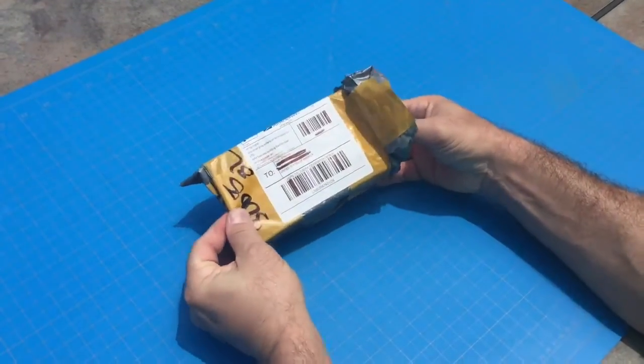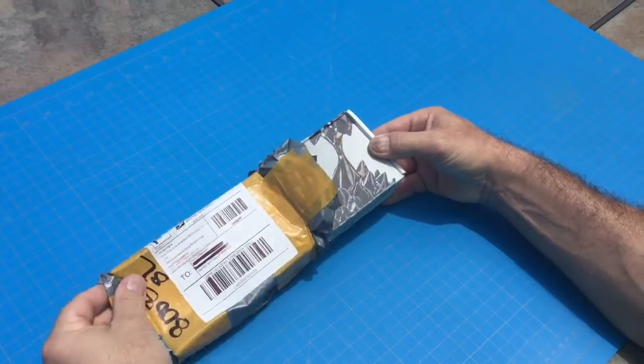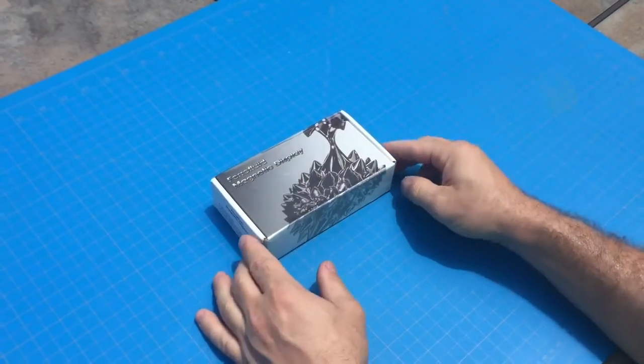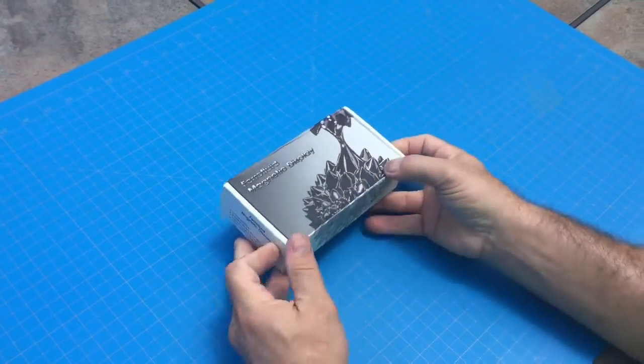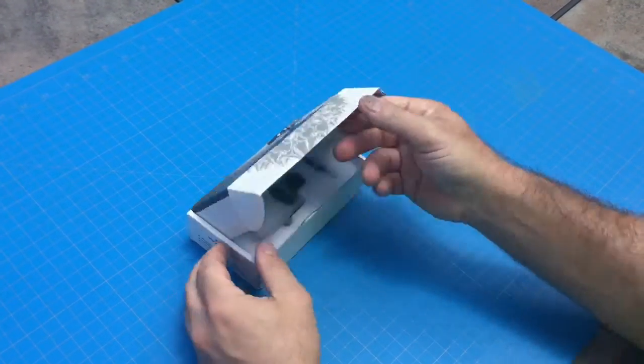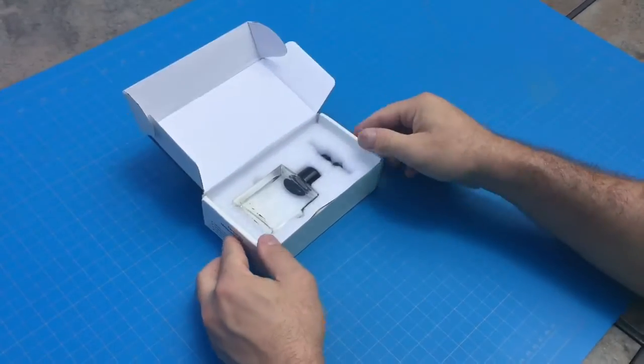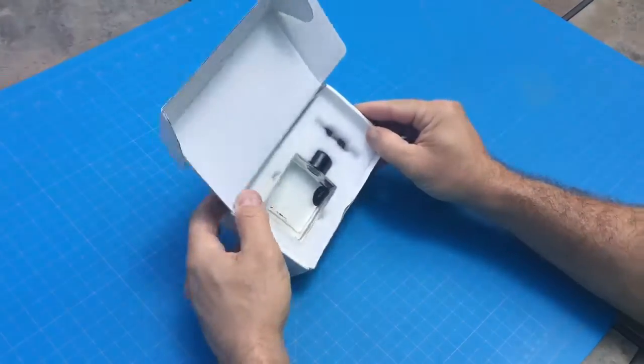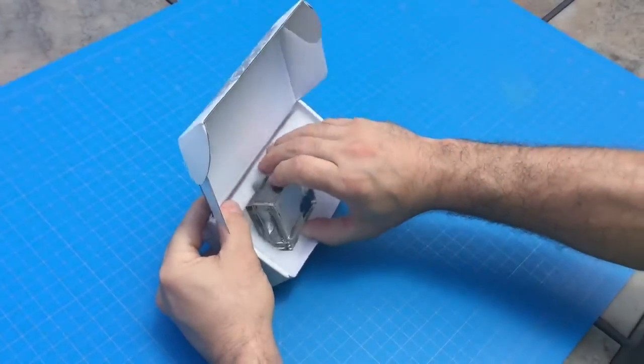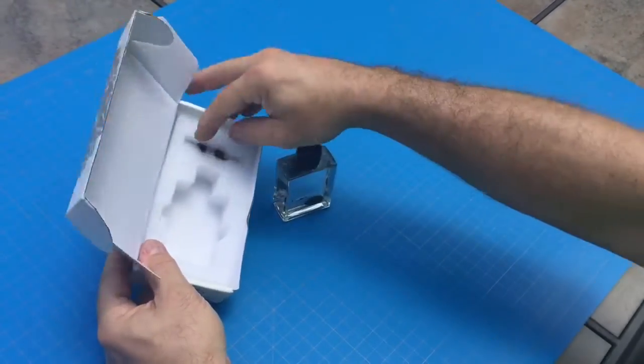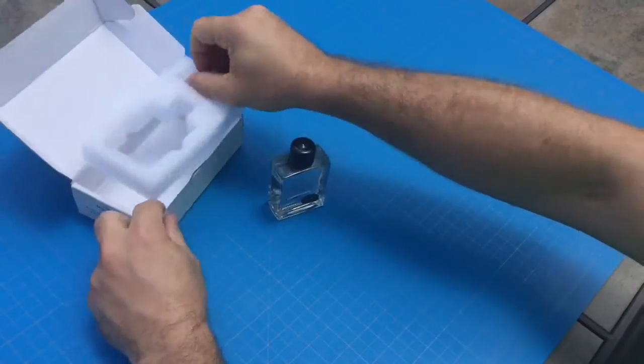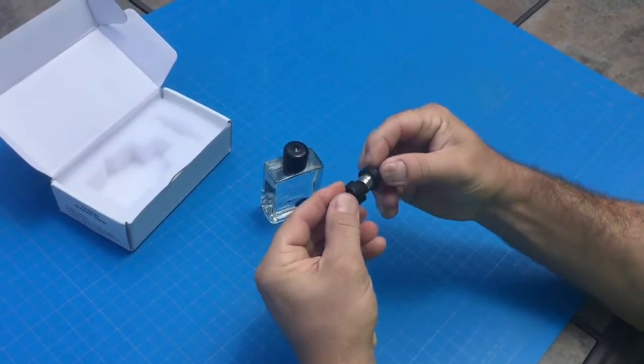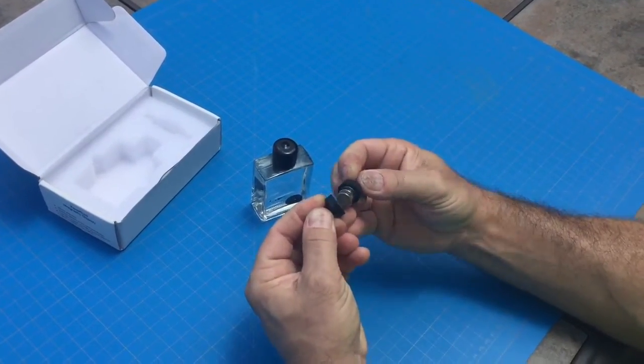All right, look what came in the mail. What's that look like? Ferrofluid! Whoa! It comes with two little magnets on a peg and four magnets total.